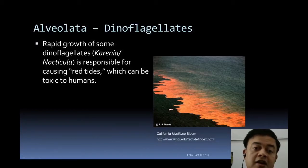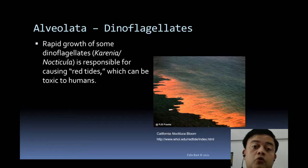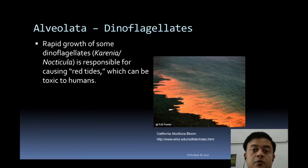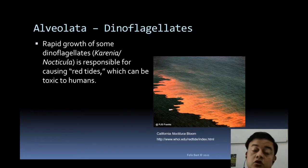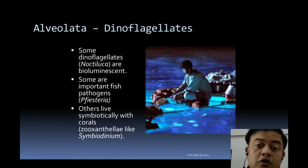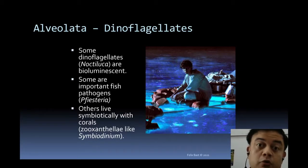Dinoflagellates are ecologically important as causative agents of harmful algal blooms. Species like Karenia and Noctiluca cause red tides — the tide itself turns red — which can be toxic to humans. Karenia brevis releases brevetoxin, which accumulates in shellfish; consuming shellfish from affected regions poses a significant health hazard. Noctiluca blooms are also notable for their bioluminescence.